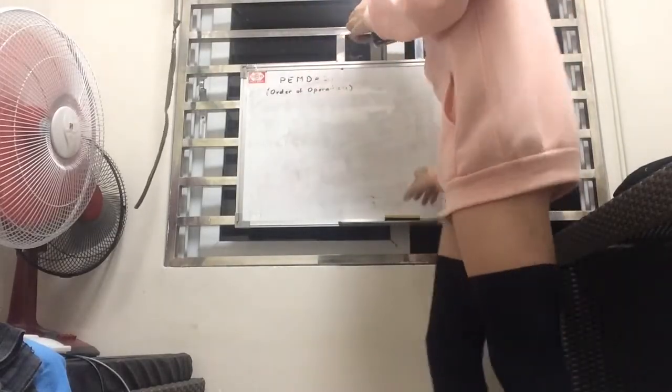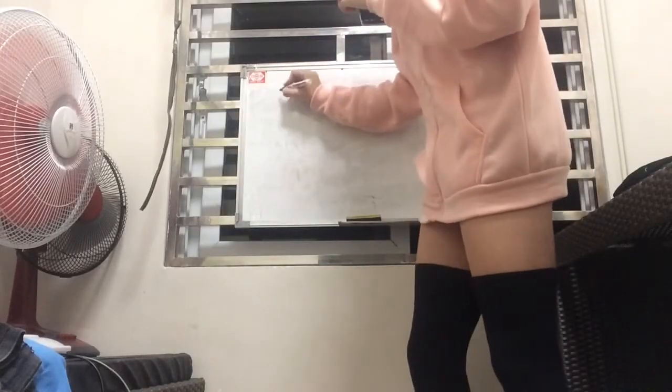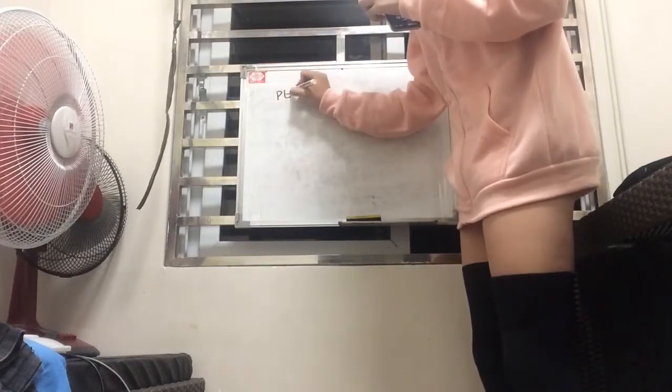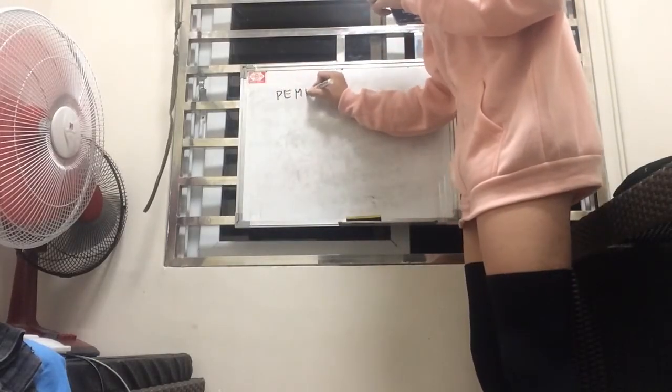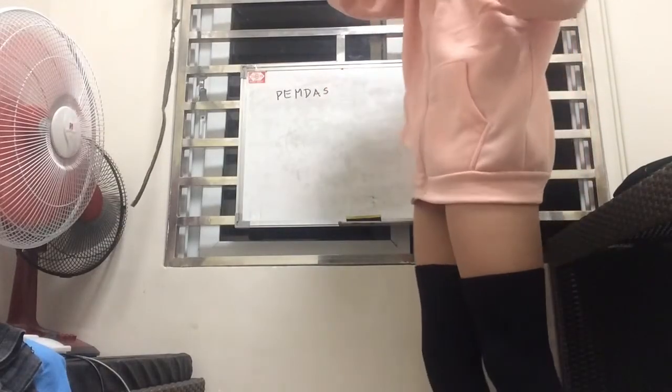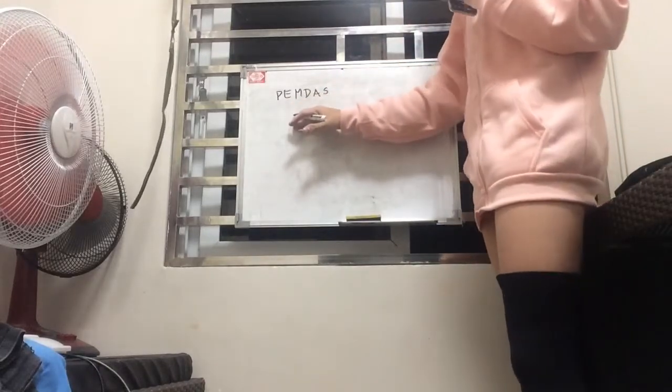So PEMDAS, or Order of Operations, is a widely accepted way of performing operations on a bunch of numbers. So this is what it looks like when you write it down.